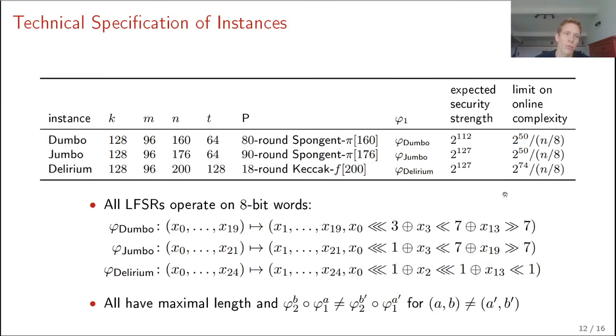So here we have some more details. I will not go over all the details, but what we see is we have three instances, Dumbo, Jumbo, and Delirium. All have a key of 128 bits, a nonce of 96 bits, a permutation size of 160, 176, and 200, and a tag of 64, 64, and 128.